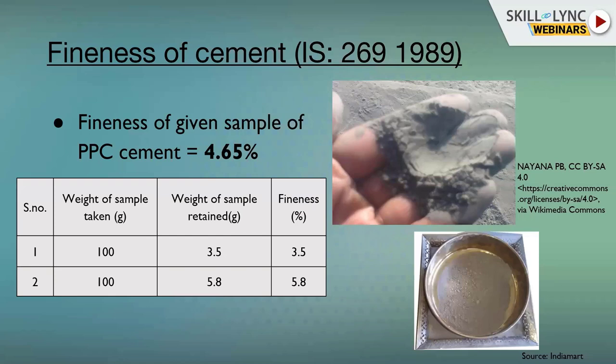The fineness of cement test determines how fine the cement particles are. As per standards, fineness should not exceed 5%. If fineness is 2–3%, the cement is suitable for use; if it reaches 5–6%, the cement is not suitable and another type should be selected.